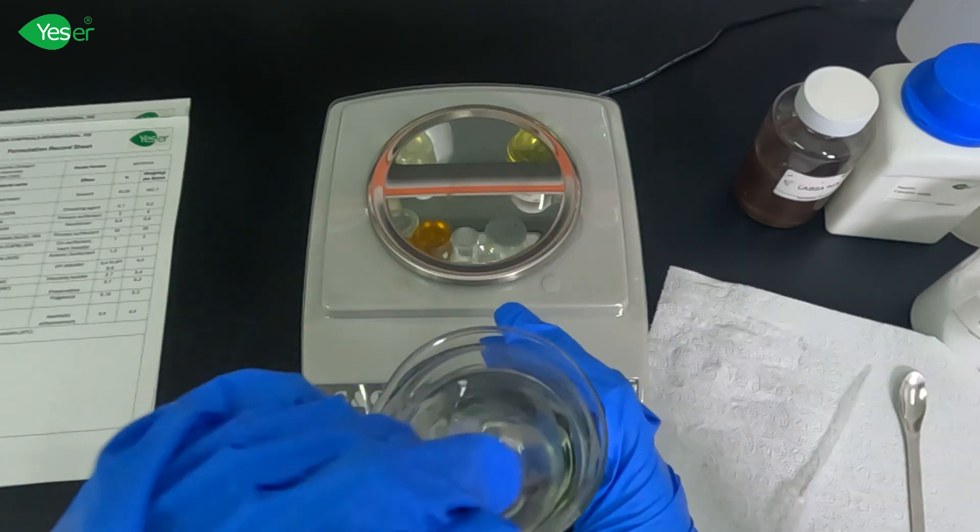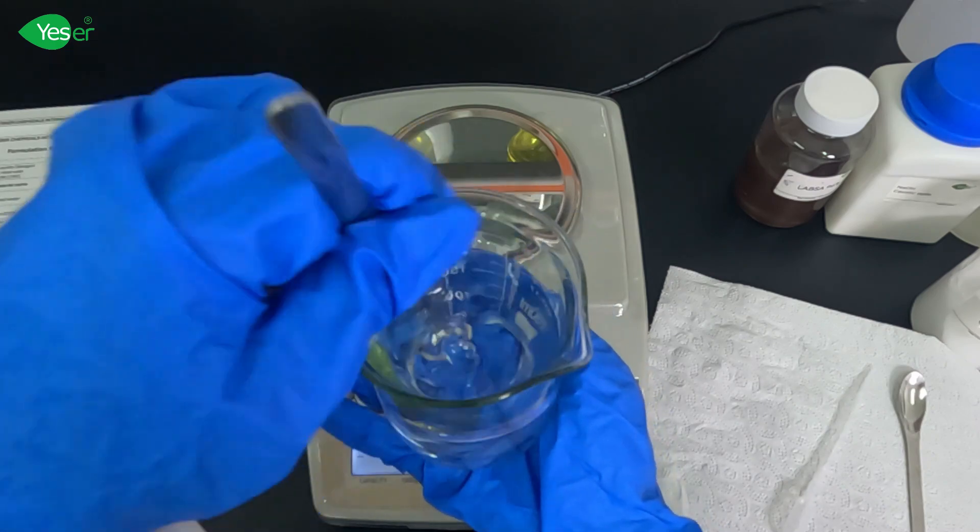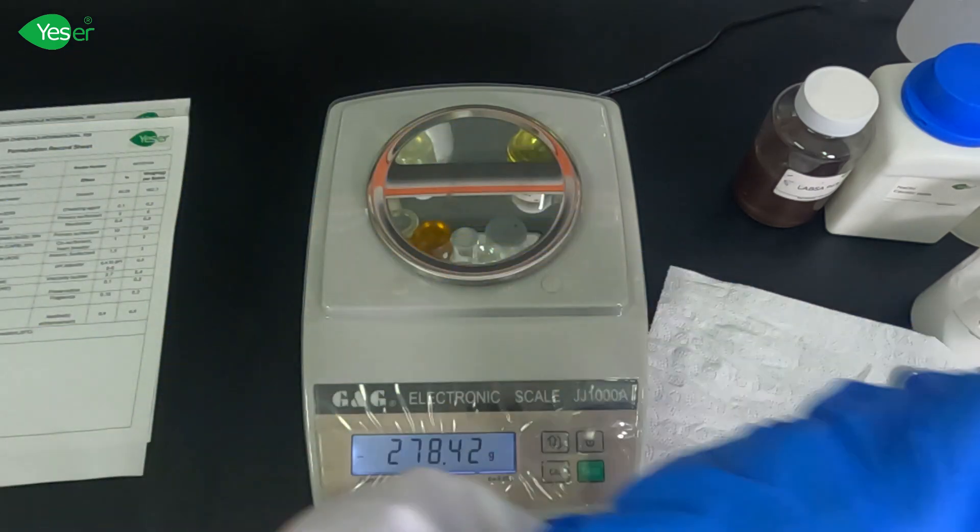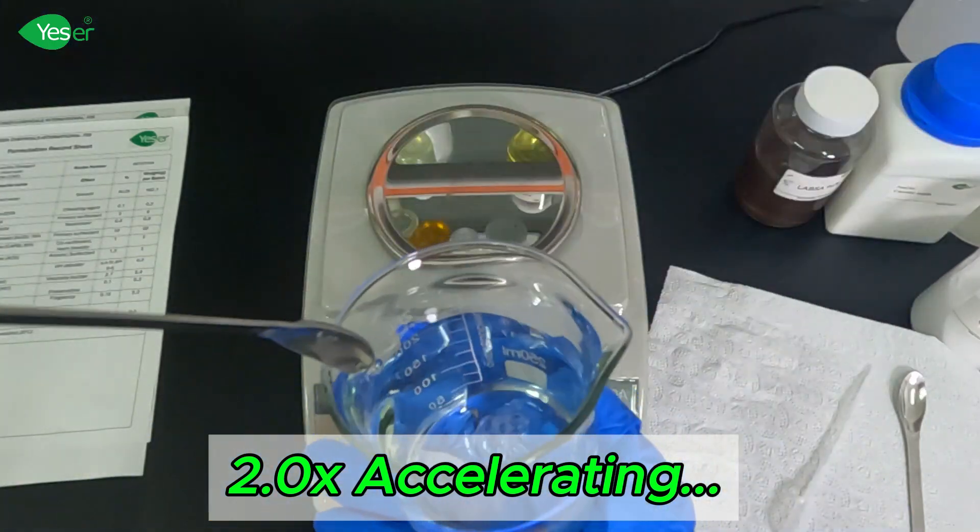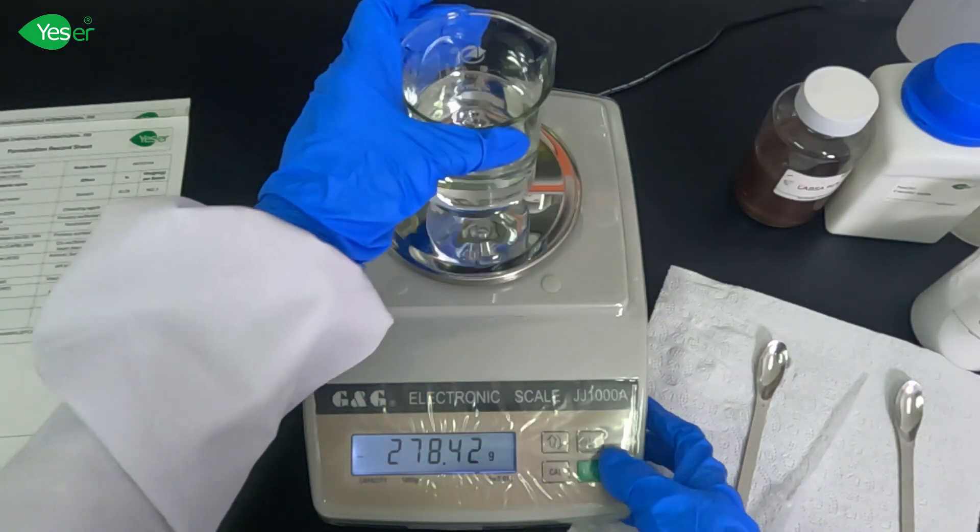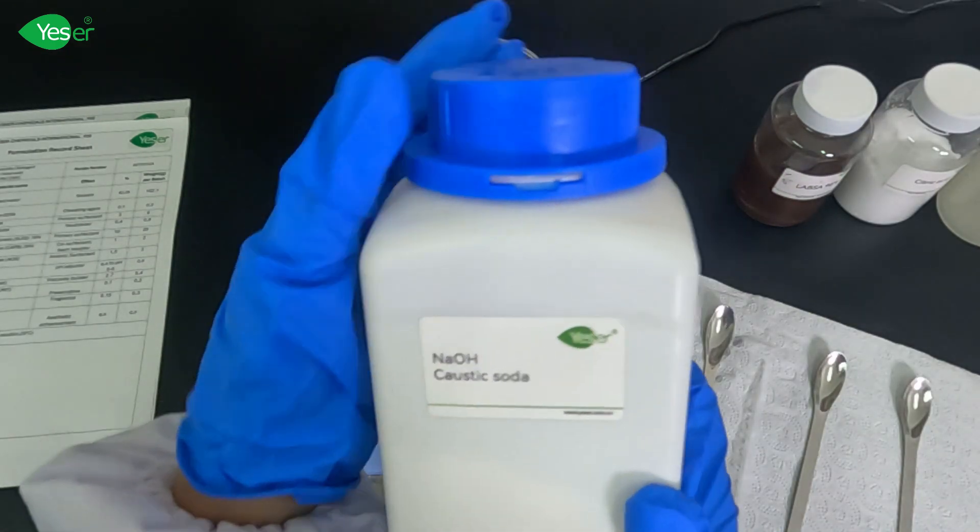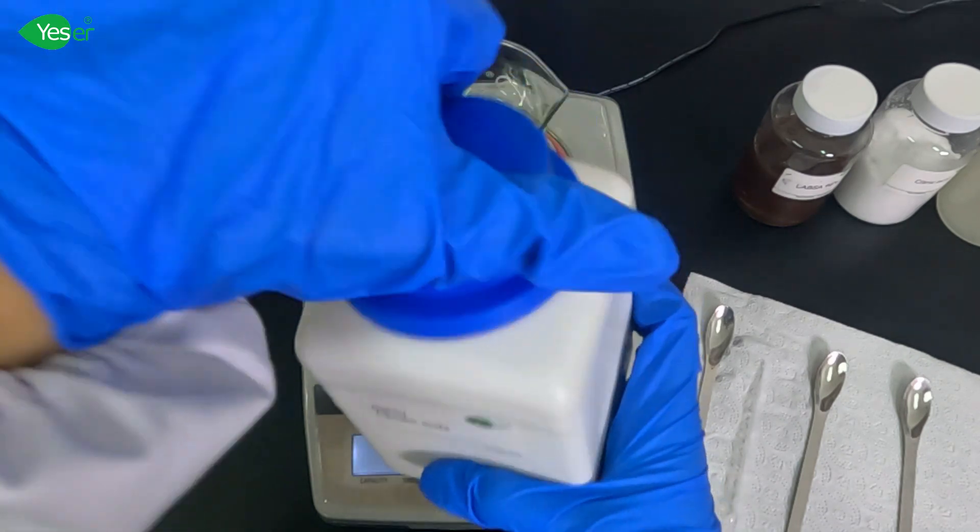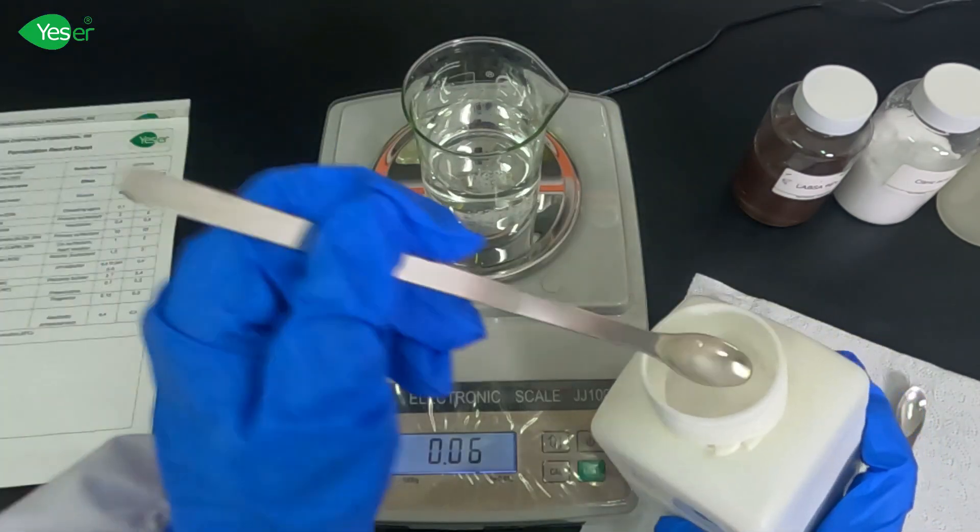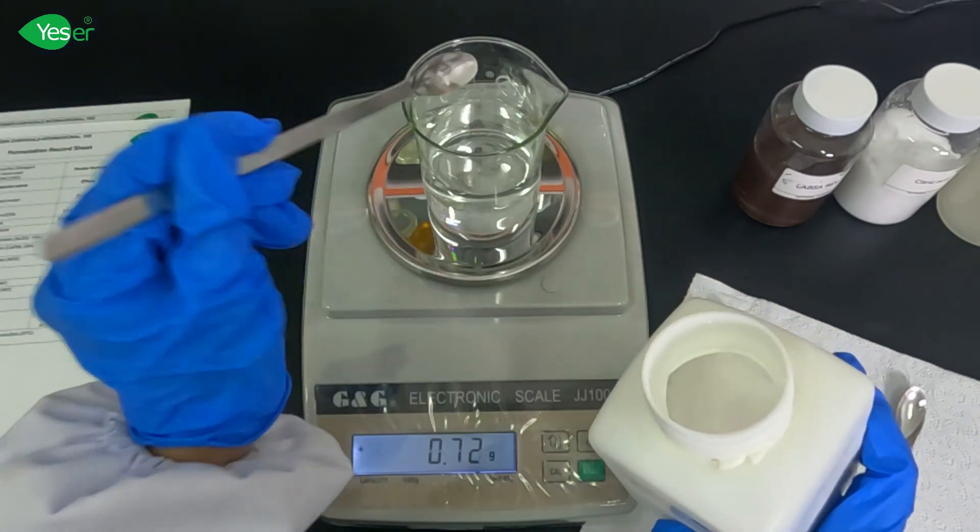Next, we will add our caustic soda. Weigh 0.8 grams of this or 0.4% for the formula. Caustic soda neutralizes the LABSA 96%, ensuring the detergent is effective and safe to use.